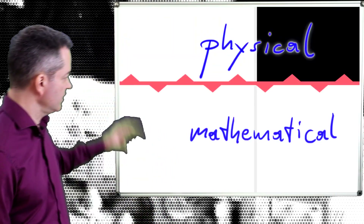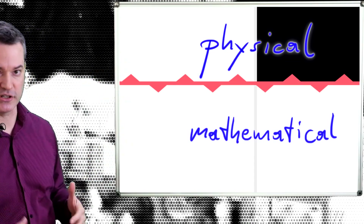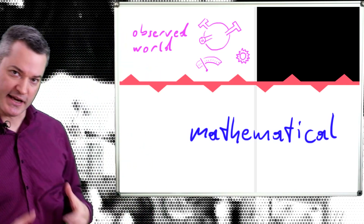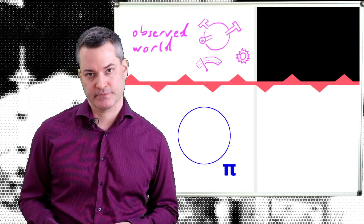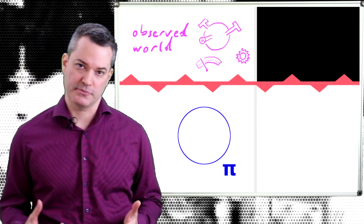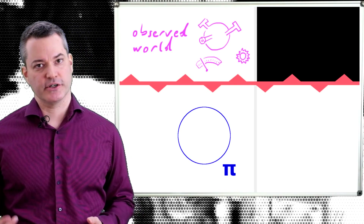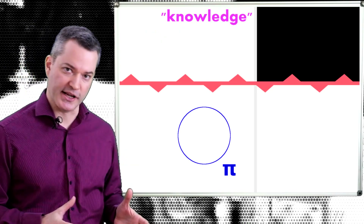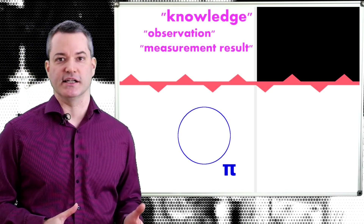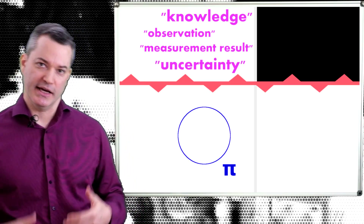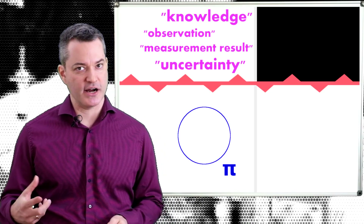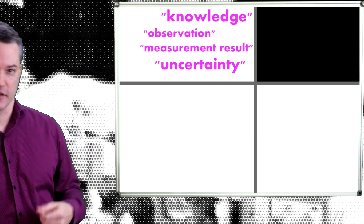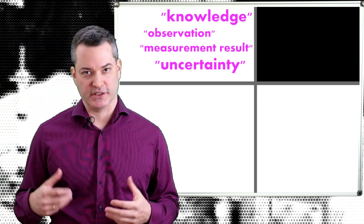Note a fundamental difference between the physical and the mathematical parts of a physical theory. The terms we need to speak about the physical world cannot be defined with mathematical precision. Instead, we need to base these terms on our experience of the physical world as we observe it. We need to use terms like knowledge, observation, measurement result, uncertainty, and so on, and accept them as axioms that are sufficiently grounded in our experience. Like the physical world itself, the meaning of these terms does not depend on our particular theory.